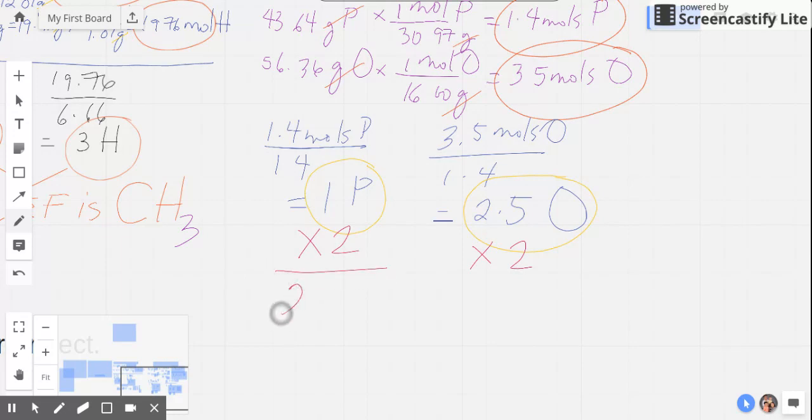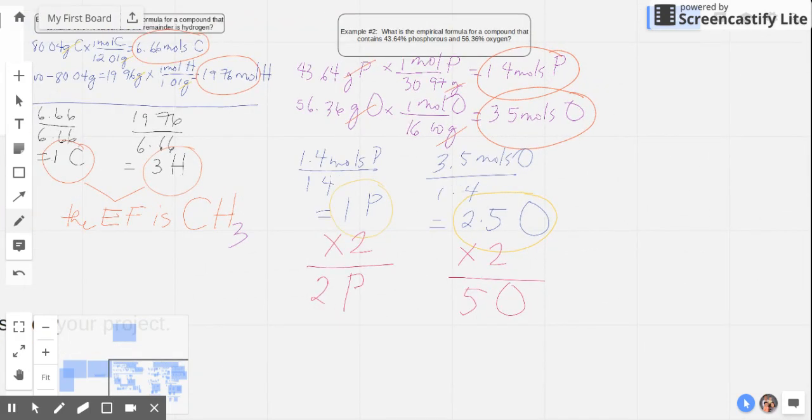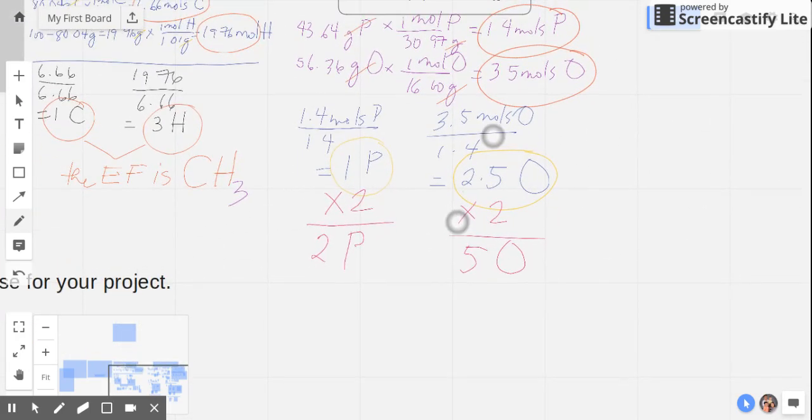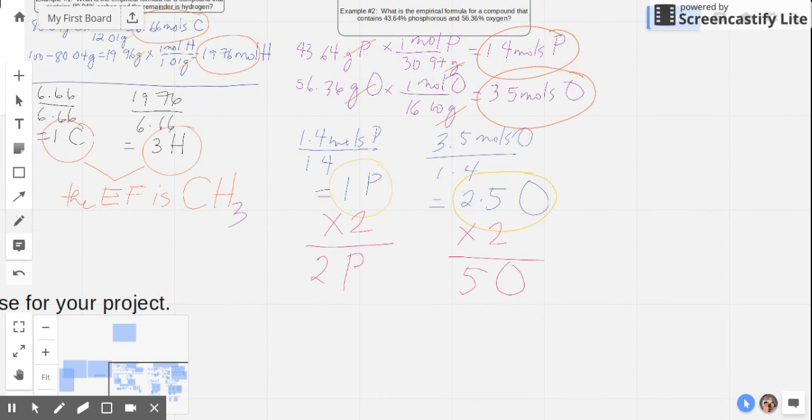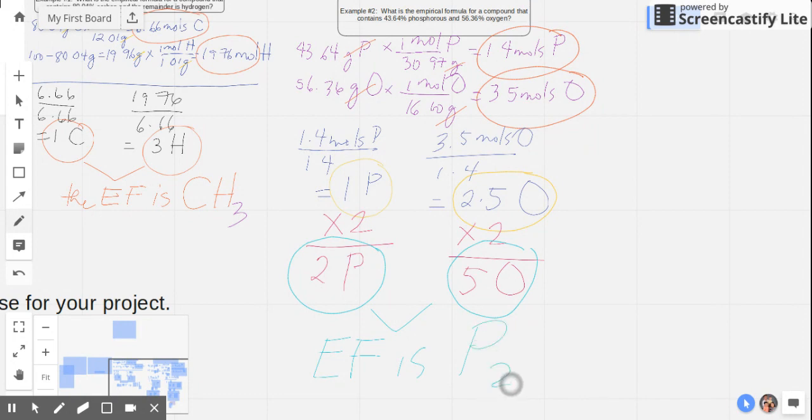So 1 times 2, I now get 2 phosphorus. And for 2.5 times 2, I'm going to get 5 oxygen. Therefore, my coefficients will now be 2 and 5, not anymore 1 and 2.5. So my new coefficients are 2 and 5. Therefore, I can already conclude that my empirical formula is P2O5.